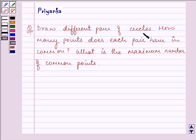Draw different pairs of circles. How many points does each pair have in common? What is the maximum number of common points? What we need to do in this question is, we need to draw different pairs of circles.